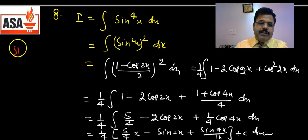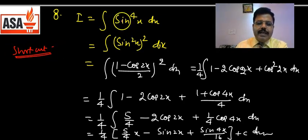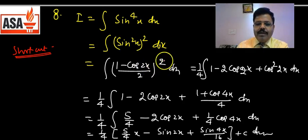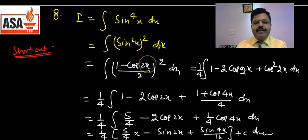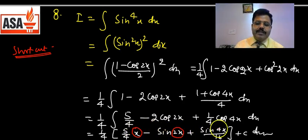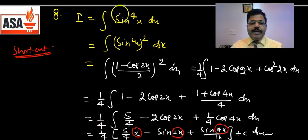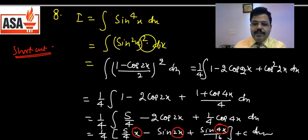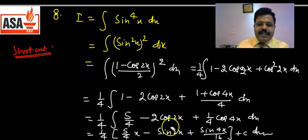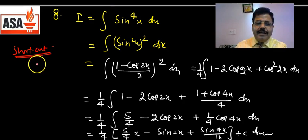इस question को solve करने का shortcut: sin square का square करेंगे — एक बार 2x आएगा, फिर 2x का whole square होगा, तो 4x में convert होगा। यानि x, 2x, और 4x तीन functions आएंगे। Option में जब जाएंगे तो जिस option में x, sin2x, sin4x properly दिखाई दें उसको tick करें। थोड़ी practice की जरूरत है — उम्मीद है वो practice आप घर बैठे ज़रूर करेंगे।